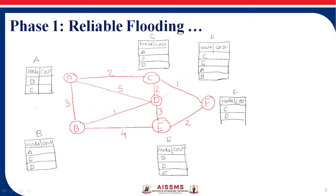Link state is the information regarding a node's nearest neighbors and the cost involved in connecting to those neighbors. For node A, it can reach B and C with the cost of 3 and 2 respectively — the cost of A to B is 3 and A to C is 2. That is the link state information table for node A. For node C, the link state information is: C can reach A, F, and D directly, with the cost of 2, 1, and 2 respectively — so C to A is 2, C to F is 1, and C to D is 2.